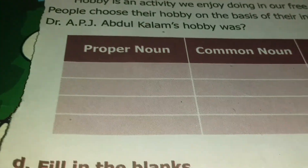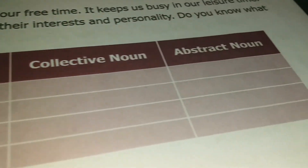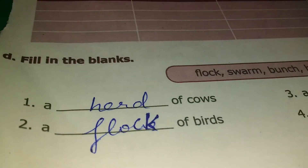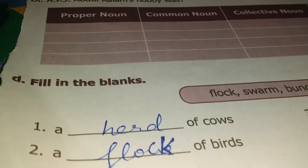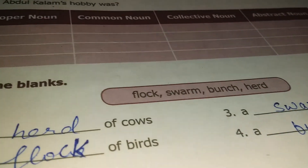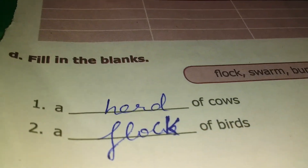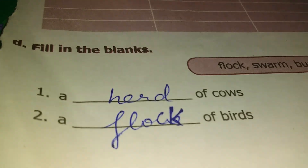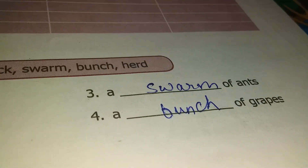This is a task for you. Tell your answers in the comment box: what is the proper noun, common noun, collective noun, and abstract noun. Also, fill in the blanks: a herd of cows — 'herd' is a collective noun. A flock of birds, a swarm of ants, a bunch of grapes — these are all collective nouns.